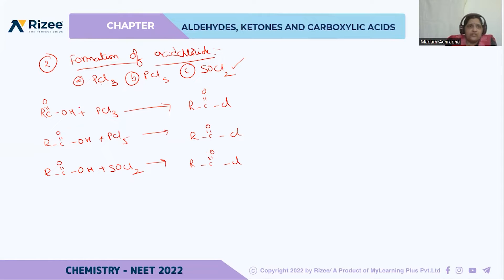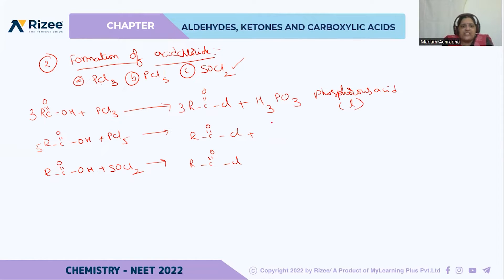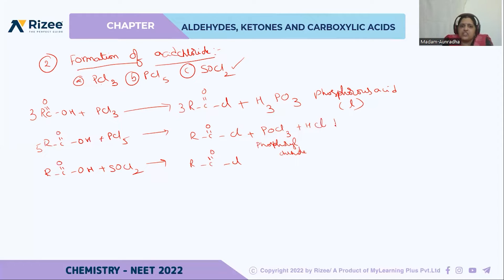Looking at the byproducts: with PCl3, the byproduct is H3PO3, phosphorous acid, and it is in liquid form. With PCl5, the byproducts are POCl3 (phosphoryl chloride), which is liquid, and HCl, which is a gas.